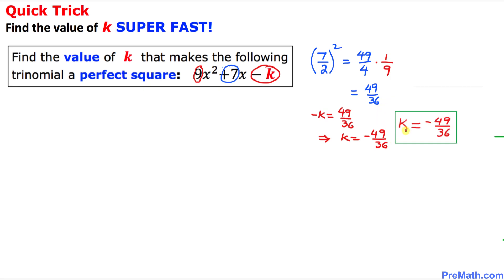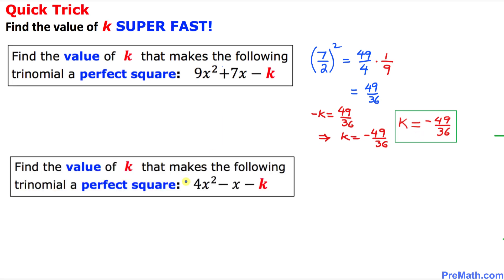That means k turns out to be simply negative 49 over 36. And here is our final example. In this trinomial, the middle coefficient for x is missing, so by default I'm going to put a 1 there — that becomes negative 1. So I put down negative 1 up here.